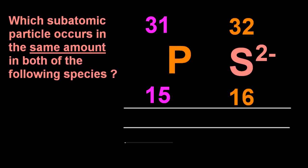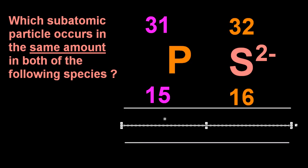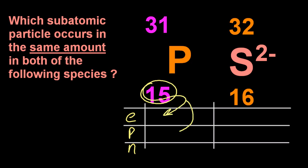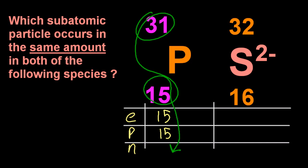Slightly more difficult. Electrons, protons, and neutrons, what occurs in the same amount? Small number is the electrons, and small number is the protons for atoms. And the difference is the neutrons.